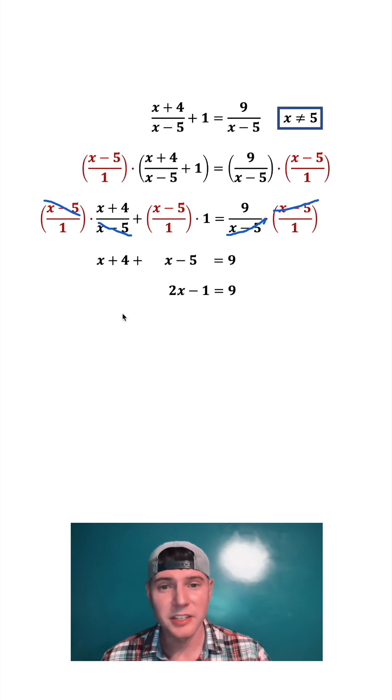Our goal is to get x by itself. We're going to add 1 to both sides. These cancel out, giving us 2x on the left hand side. 9 plus 1 equals 10. Then we divide by 2. 2x divided by 2 is x, and 10 divided by 2 is 5.